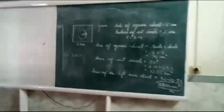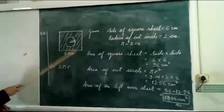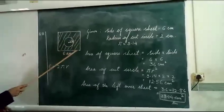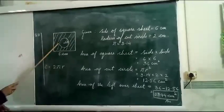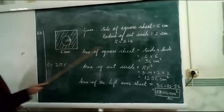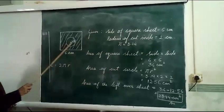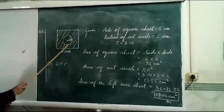This question is like the previous question. You have to find out the area of this square, and the formula for the area of the square is side into side. Then you have to find out the area of this cut circle.